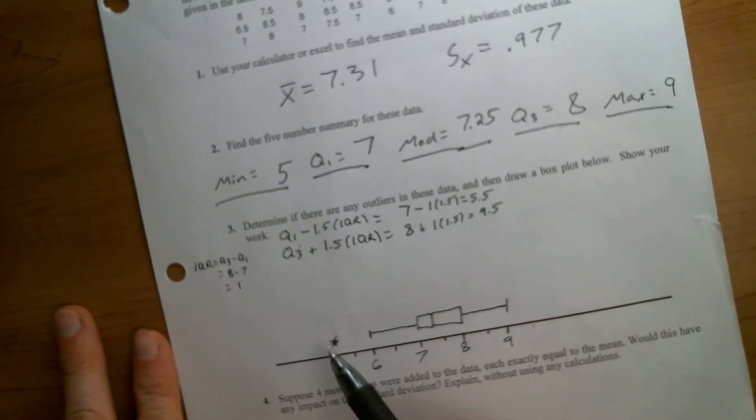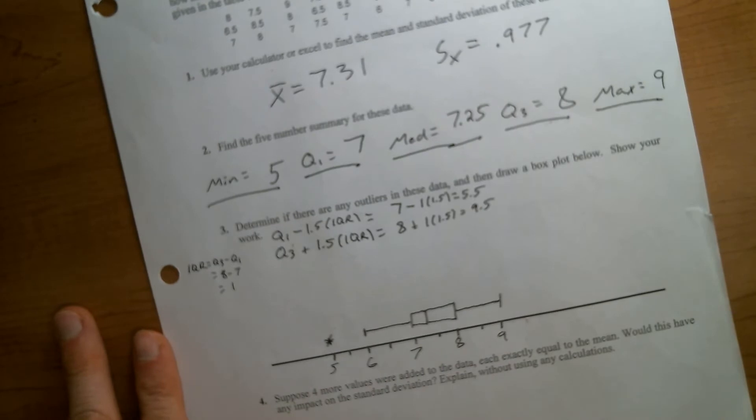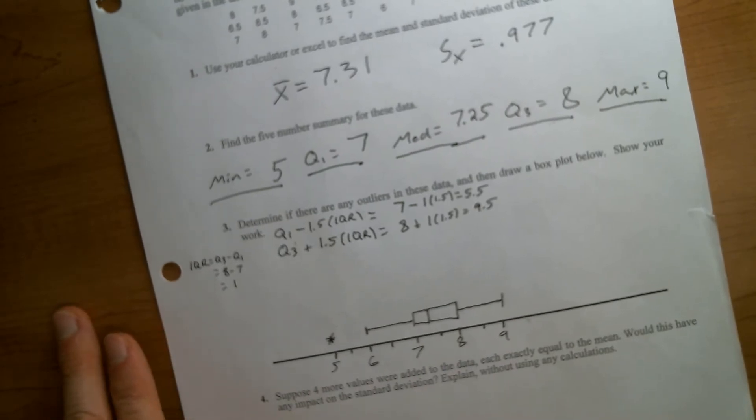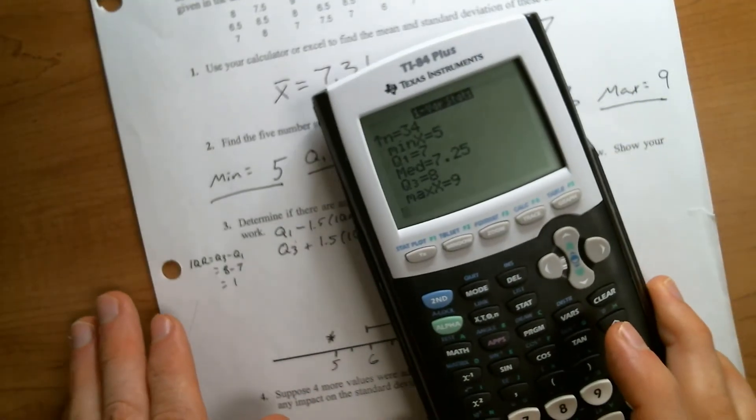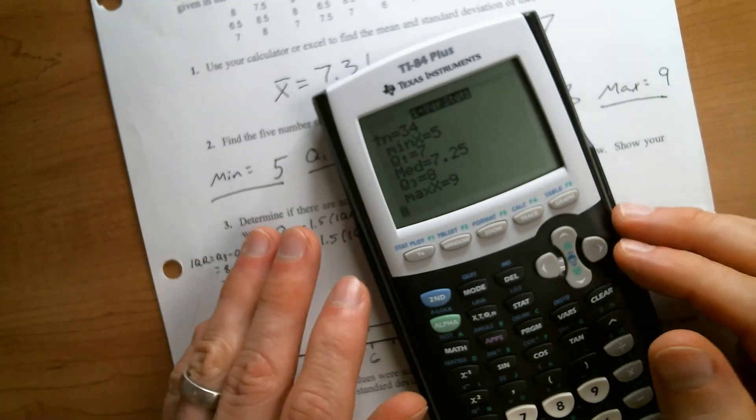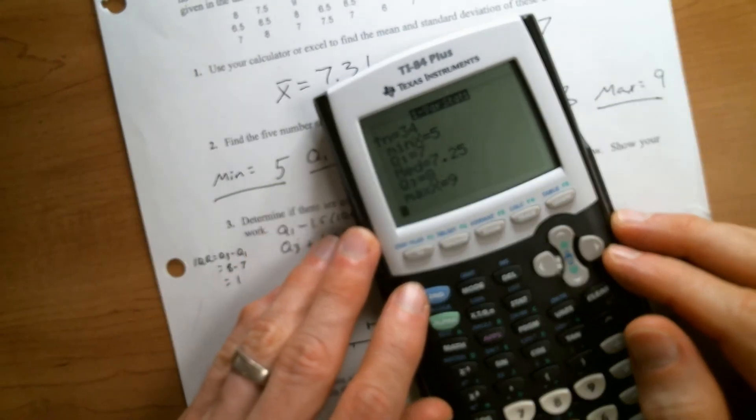You have to make sure that you're designating outliers with an asterisk to get full credit on these. And also remember, you can do these on the calculator.